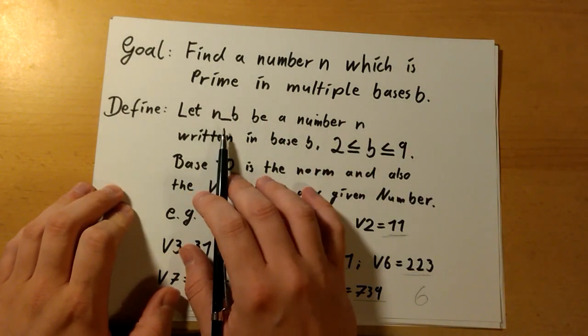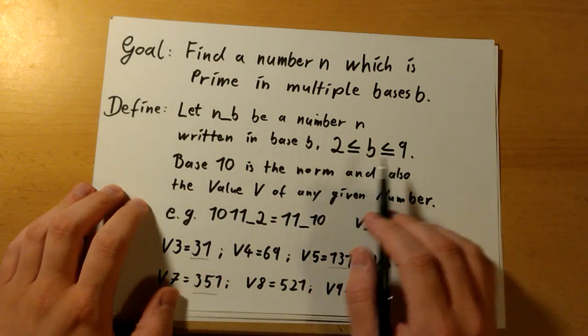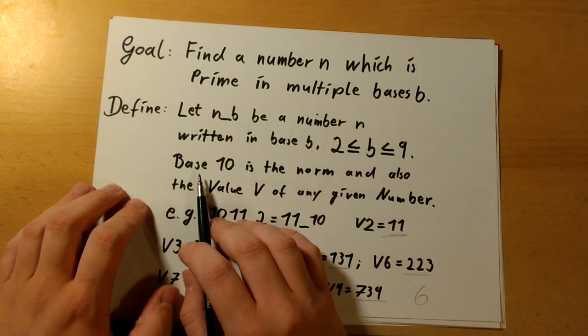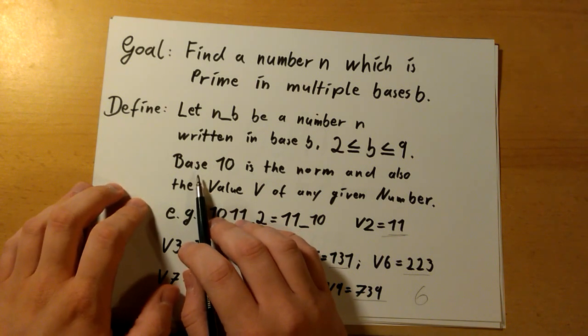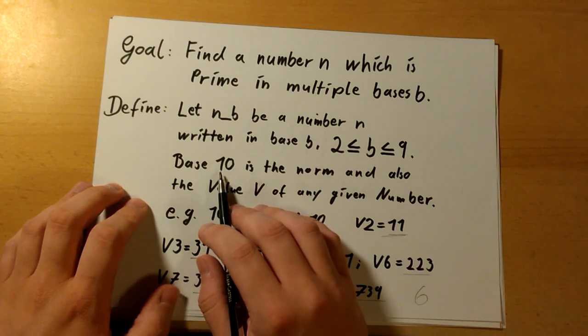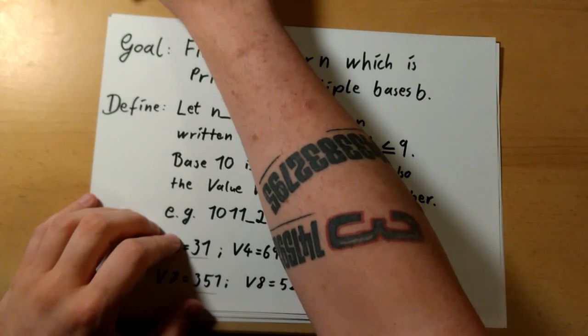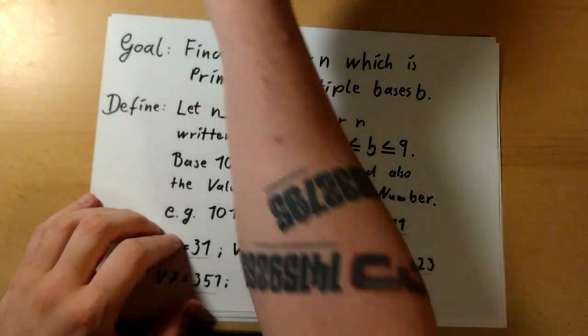Let n sub b be a number n written in base b, b ranging from 2 to 9, where base 10 is the norm and won't be noted. Furthermore, if I refer to a value of a number, it is the base 10 number. So if I want a number to be multiple primes at once, it's all about that base.